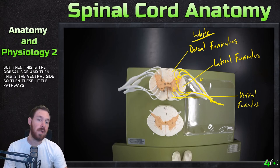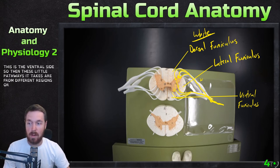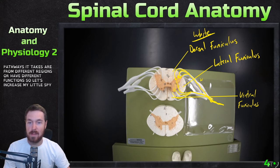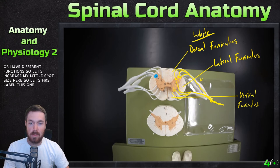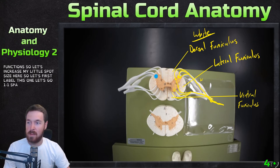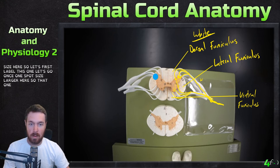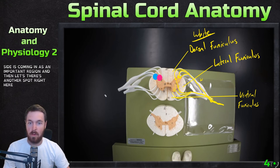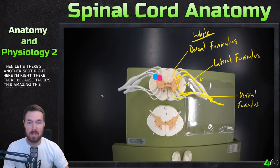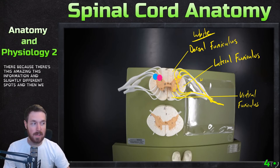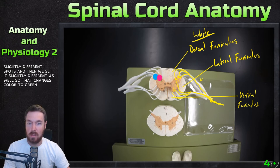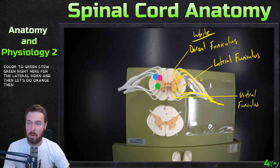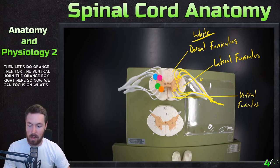These little pathways it takes are from different regions or have different functions. The spot where the dorsal side is coming in is an important region, and they're summating this information in slightly different spots. When we exit, it's slightly different as well. Let's change color for the lateral horn and for the ventral horn, so we can focus on what's coming in and what's going out.